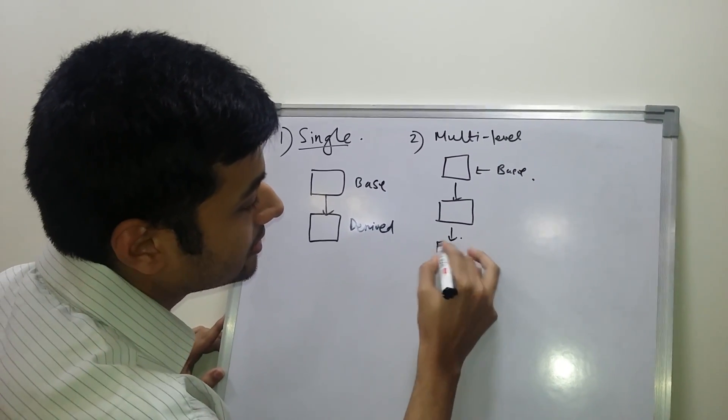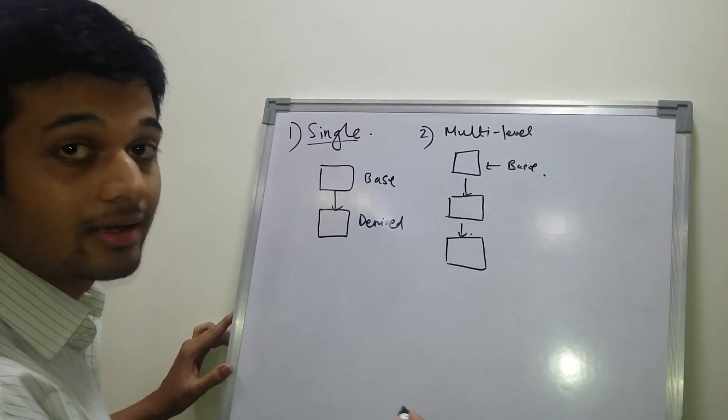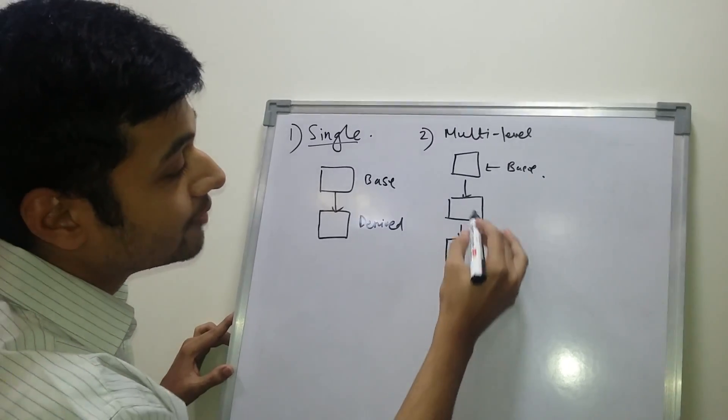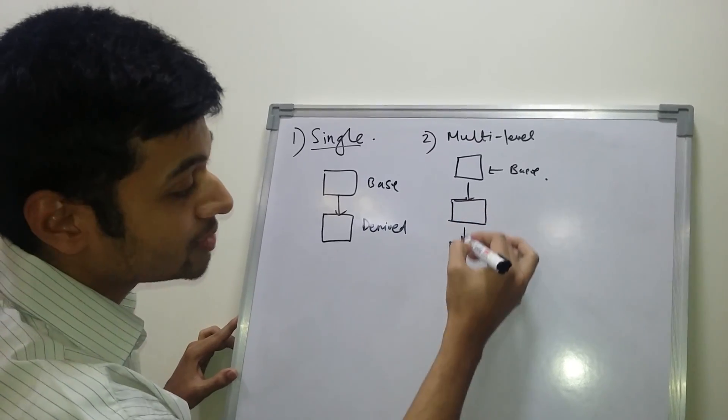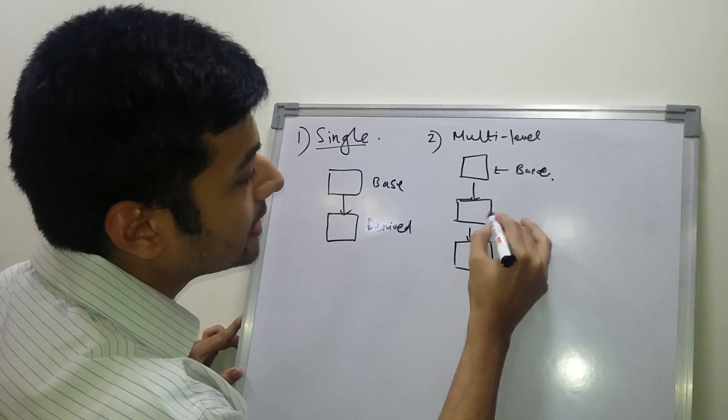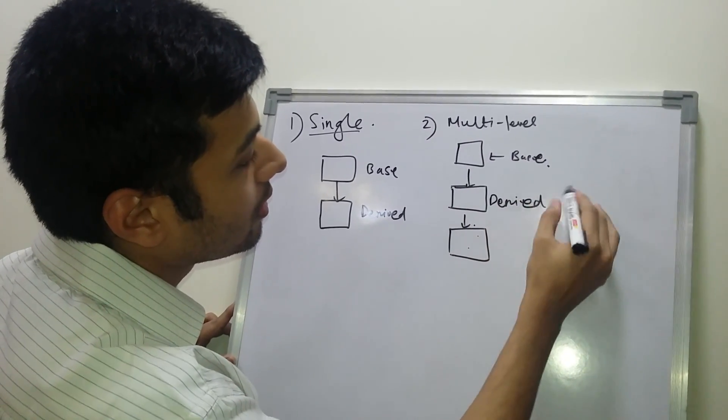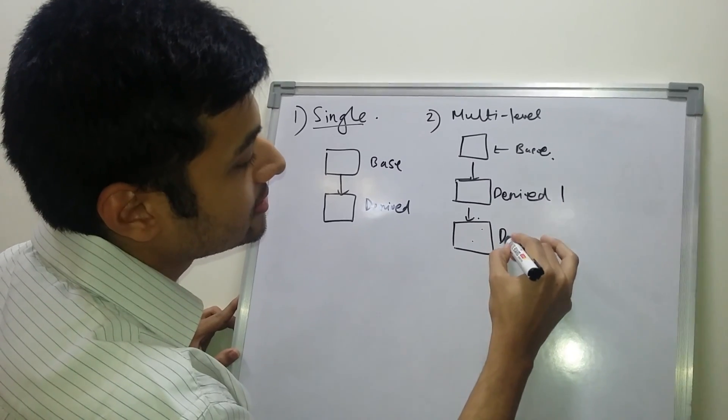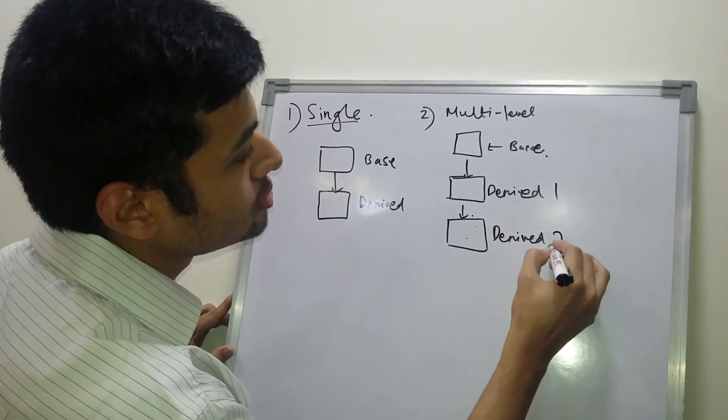And there is another third one, third derived class, of which this will be the base class of the third derived class. So this is the base, this is the derived one, and this is the derived two.